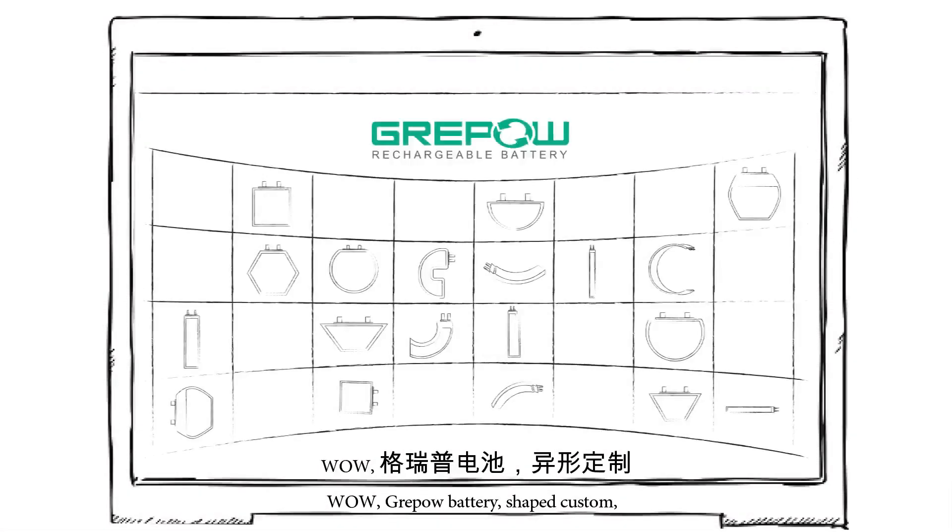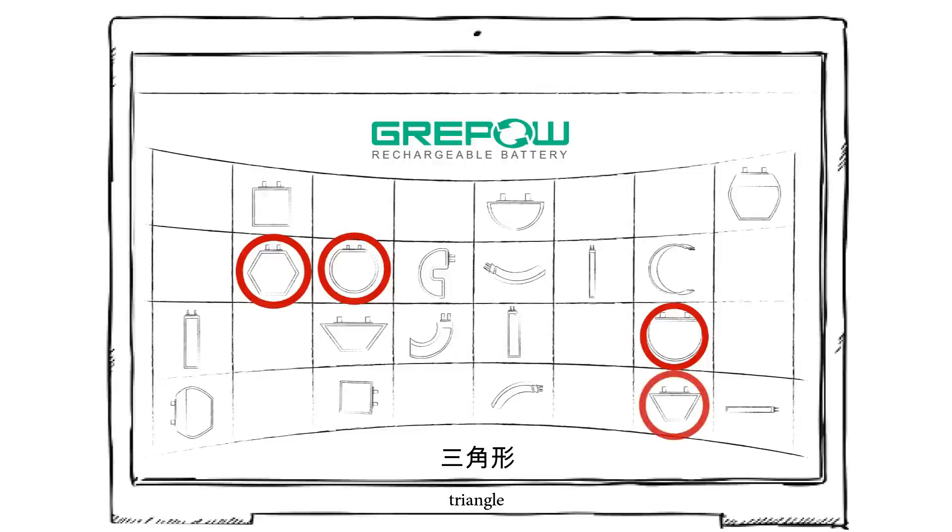Wow, Griebel battery. Shaped custom, round, D-line, hexagonal and triangle, R.